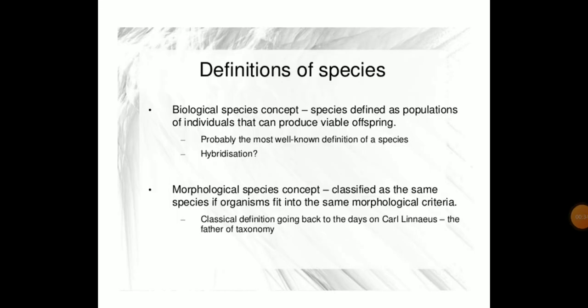So the definition of species. As we have seen, the biological species concept defines species as populations of individuals that can produce viable offspring. For example, if you consider a group of animals like dogs, they breed within their own population and cannot breed with the cat population. Only then can we say they belong to a specific species.